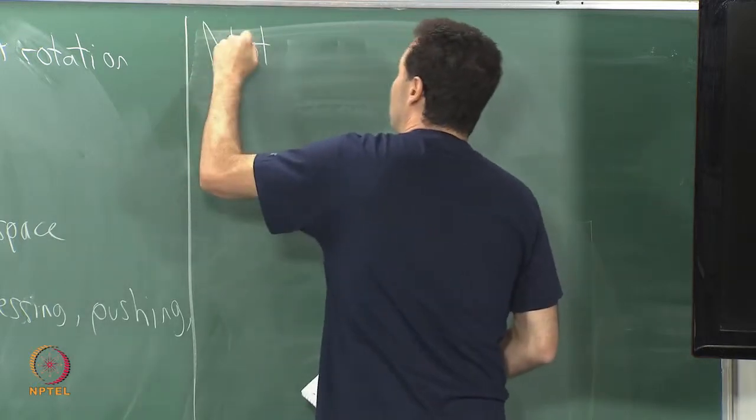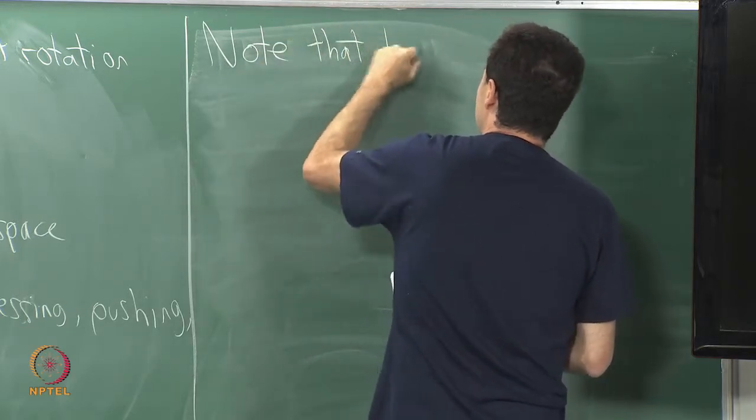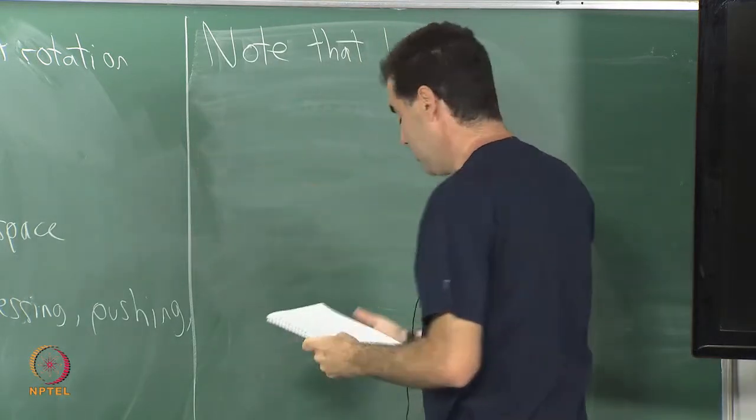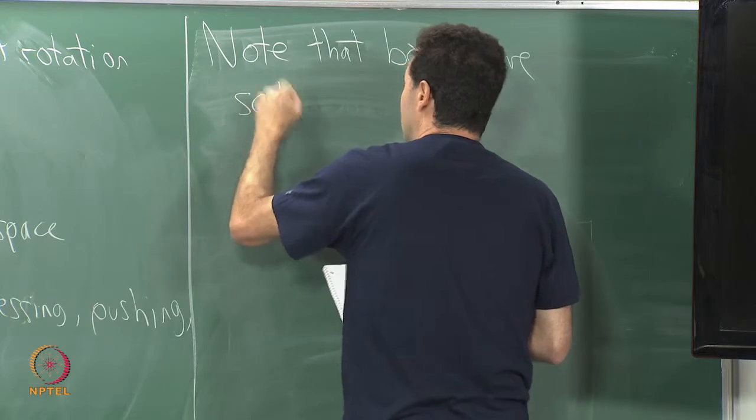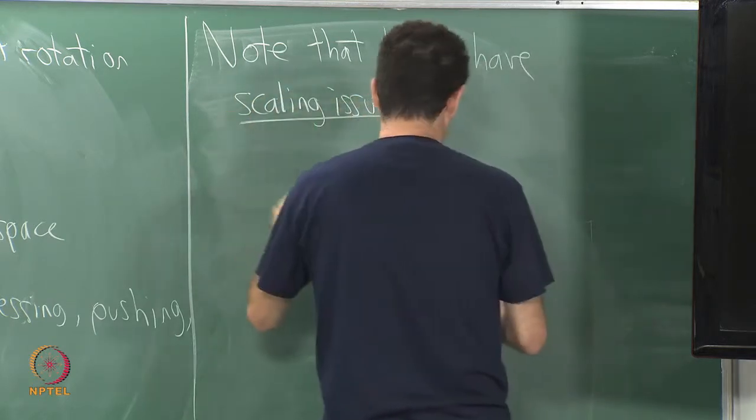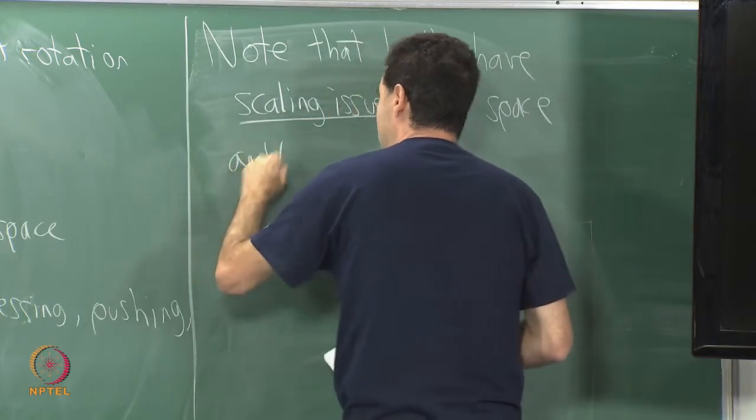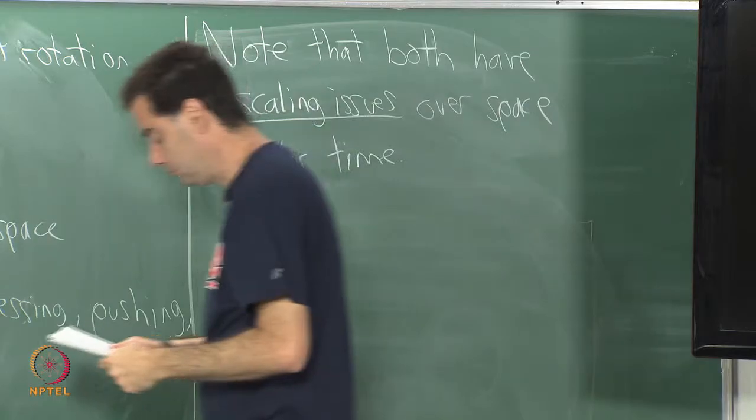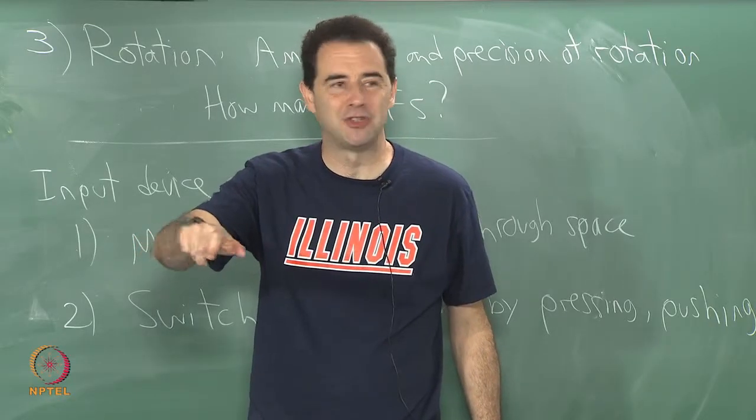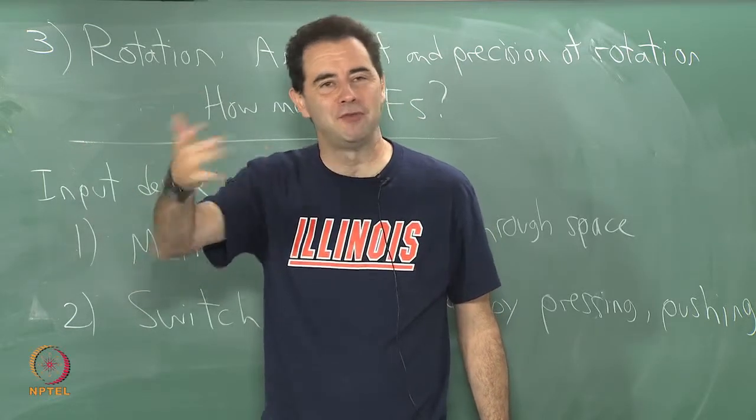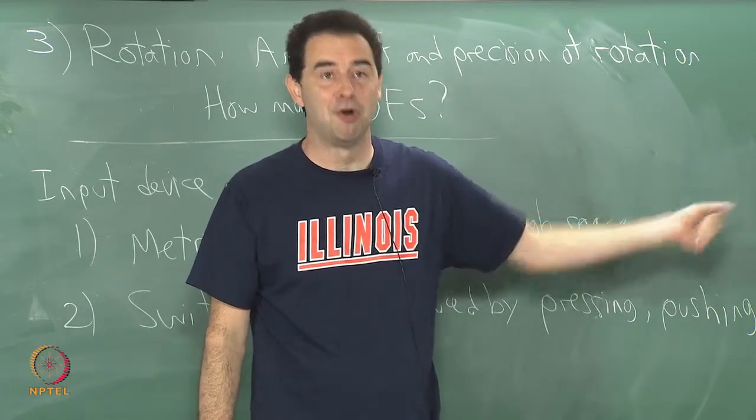One general thing that is very interesting and important to pay attention to here: note that both of these, essentially all of these input devices that we consider, have what I call scaling issues over space and or time. We see this already with a computer mouse, right? There is a speed setting. You move your mouse a tiny bit and the pointer on the screen moves some amount, and people have different preferences for that. But I just want to point out that you do not need to have perfect one to one correspondence.